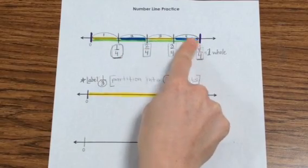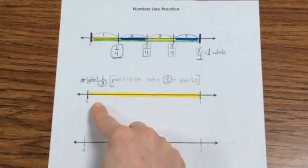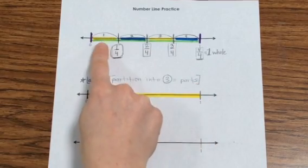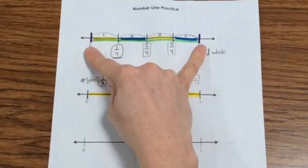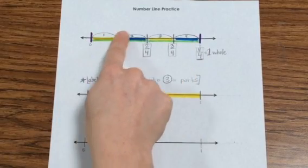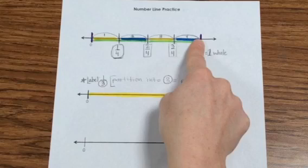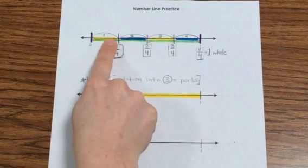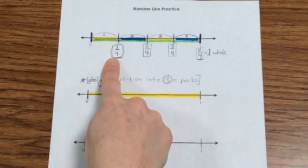And then I partitioned each half into half to break it into fourths. So you see this one whole, from the zero to the one, is broken into one, two, three, four equal parts, making this first yellow part one-fourth out of a whole.